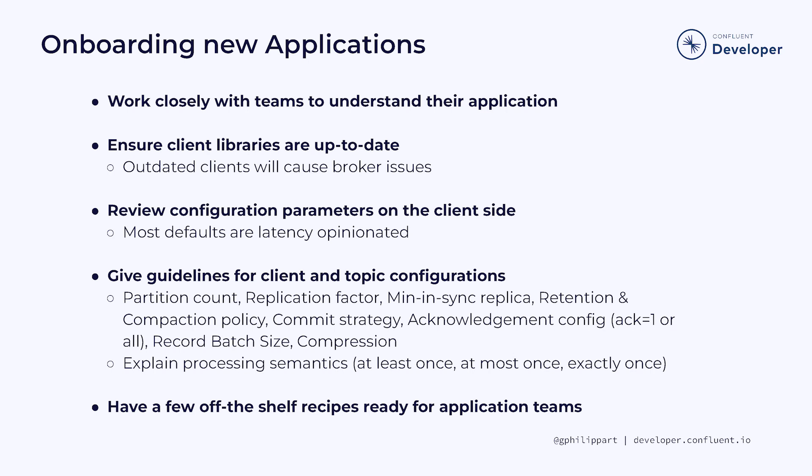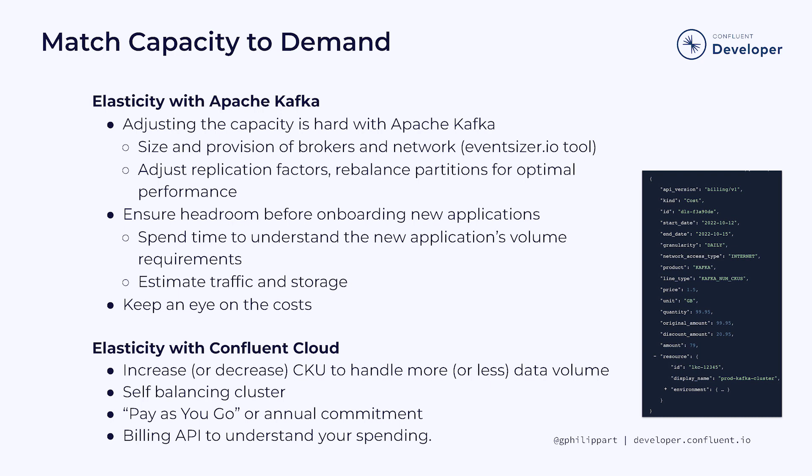It's often helpful to have a few off-the-shelf recipes ready for application teams depending on their throughput, latency requirements, and the criticality of their workload. Before the holiday sales rush, you want to make sure you can keep up with customer demand by increasing capacity. But once it's over, you don't want that highly provisioned cluster sticking around costing you money. Teams working with Apache Kafka in a self-managed setup usually have a hard time doing this safely and without downtime. It's quite complex to size and provision brokers and networks, and you must rebalance partitions across nodes for optimal performance. You can use the event-sizer.io calculator mentioned earlier, but it will give you guidance just once and won't carry out the changes for you.